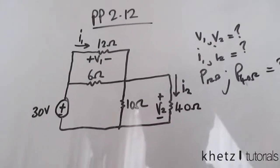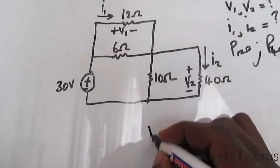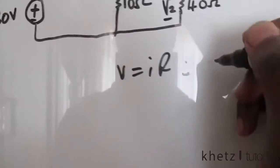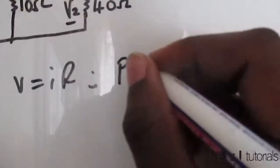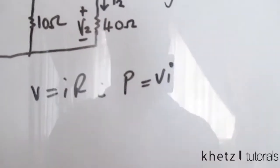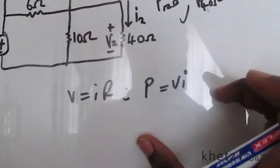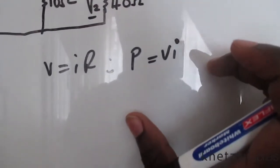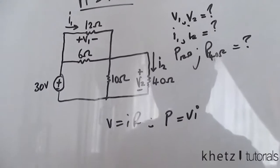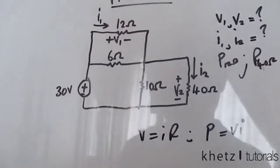Let's start off with a few formulas. From Ohm's law we have v equals ir, and we have power which equals vi. These are the main formulas which we're going to use.